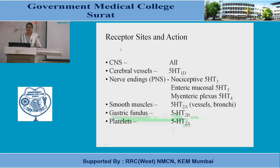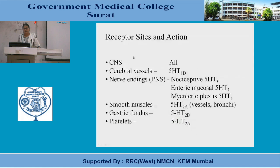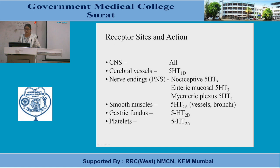Regarding the site of the receptors: all receptors are present in the CNS. In the cerebral vessels, only 5-HT1D receptors are present. On nociceptive nerve endings, 5-HT3 receptors are present. In the enteric mucosa, 5-HT3 receptors are found. In the myenteric plexuses, 5-HT4 receptors are present. On smooth muscles — in vessels as well as bronchi — 5-HT2A is present. In the gastric fundus, 5-HT2B is present, and on platelets, 5-HT2A is present.